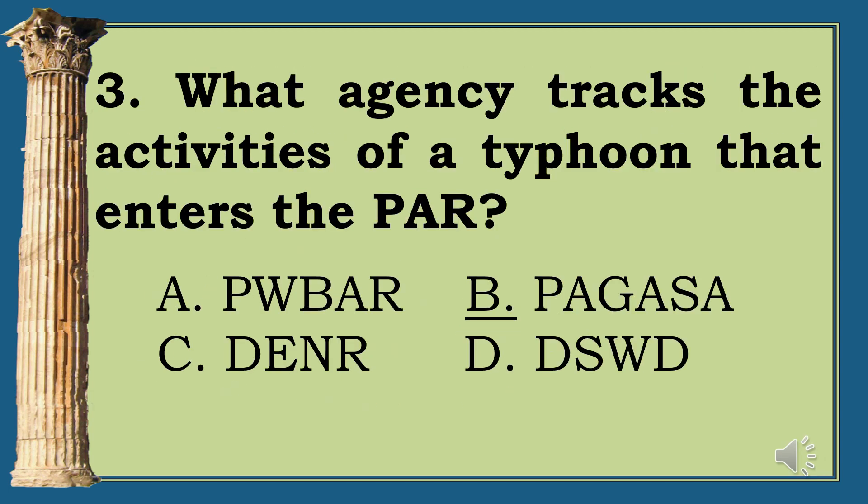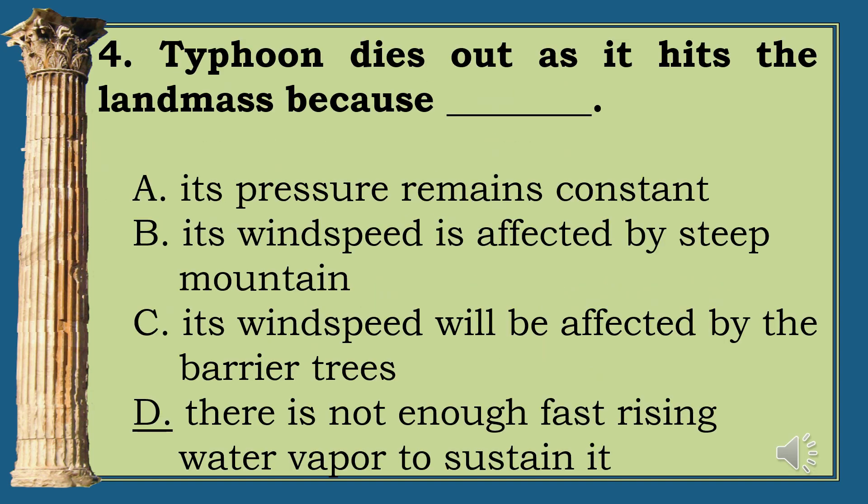Question 3: What agency tracks the activities of a typhoon that enters the PAR? A. PA. B. PAGASA. C. DENR. D. DSWD. The correct answer is letter B, PAGASA.